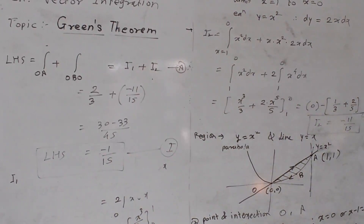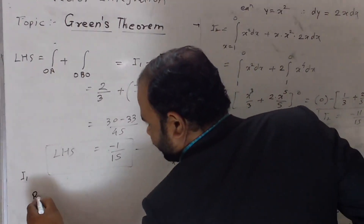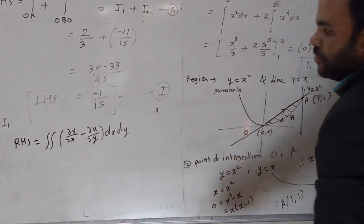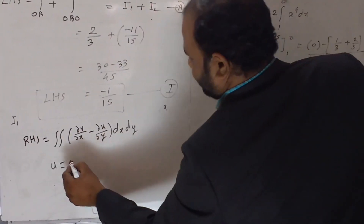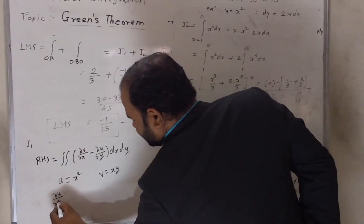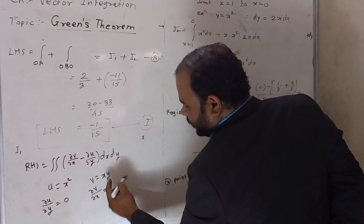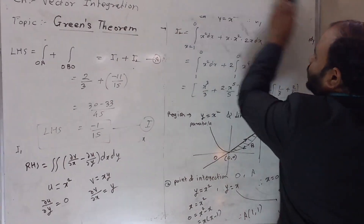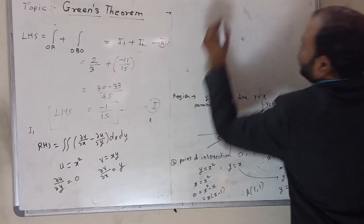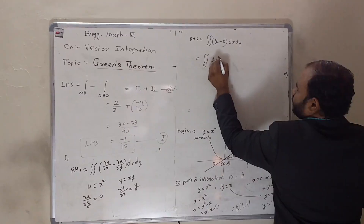Now we solve the RHS. RHS is the double integration of ∂v/∂x minus ∂u/∂y dx dy. We have u = x² and v = xy. Differentiating u with respect to y gives 0 (since x is constant with respect to y), and differentiating v with respect to x gives y (since y is constant with respect to x). Substituting into the RHS formula: RHS = ∬(y − 0) dx dy = ∬y dx dy.